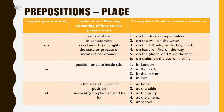The word 'in' is used to refer to a position or state inside something — for example: in London, in the book, in the mirror, in love. The word 'at' is used to refer to an area or a specific position — for example: at home, at the table, at the party, at the cinema, at school.